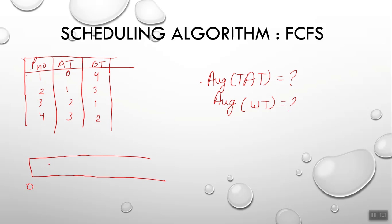Starting from zero on the Gantt chart, at time 0 process P1 is available and will execute completely. The burst time of P1 is 4, so at time 4, processes P2, P3, and P4 all become available. P2 executes next with burst time 3, finishing at 7. P3 executes with burst time 1, finishing at 8. P4 has burst time 2, finishing at 10.